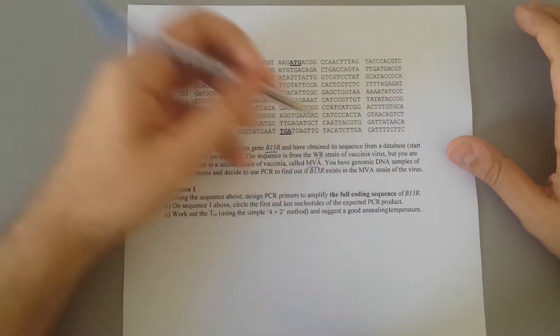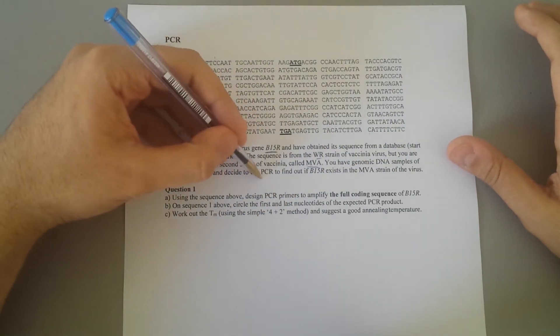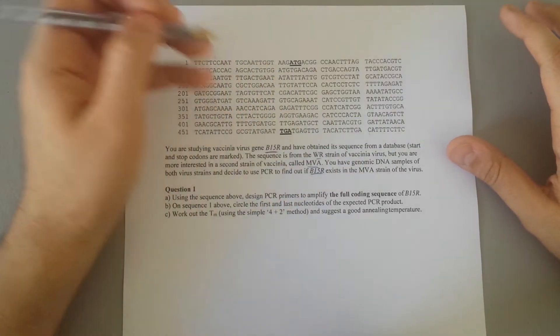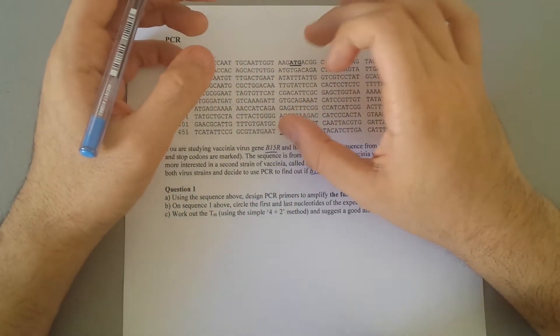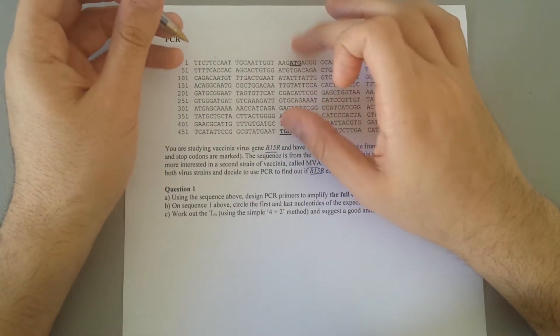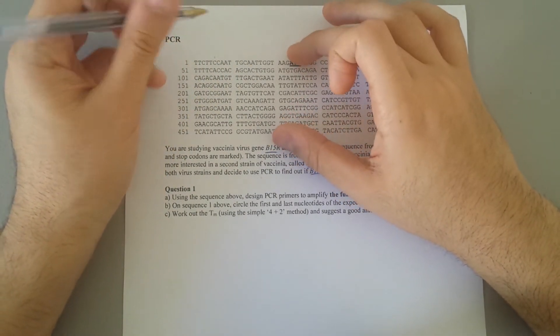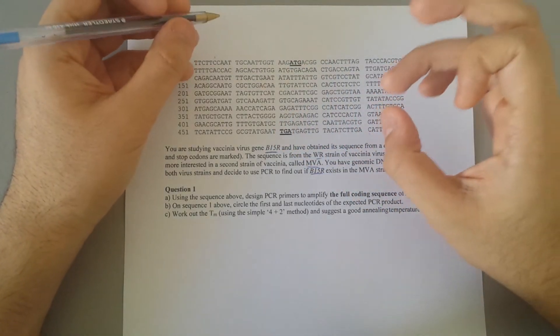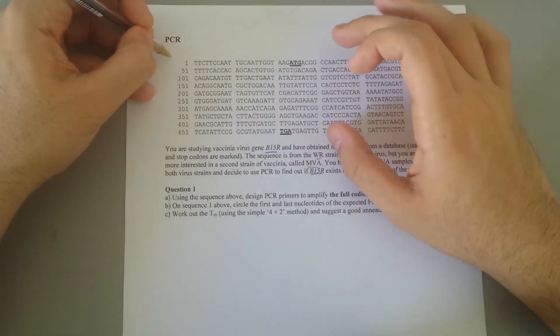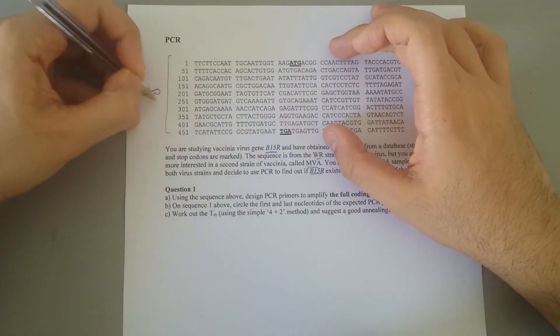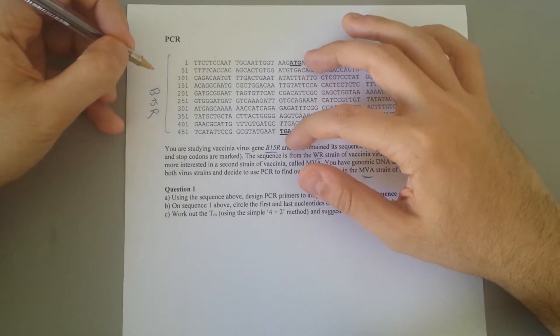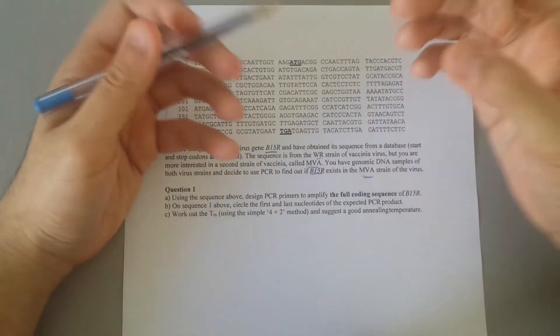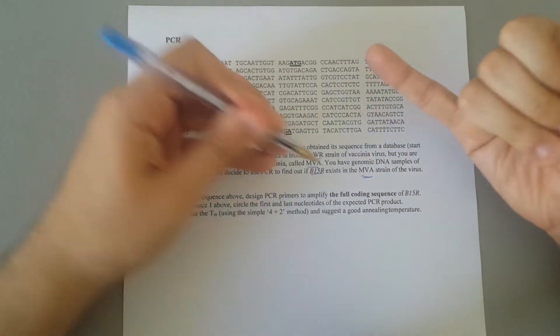We have genomic DNA samples of both virus strains and decided to use a PCR to find out if B15R exists in MVA strain of vaccinia virus. So what happens is that we want to obtain primers, and after we obtain primers, we want to amplify to see whether that specifically amplified DNA fragment exists in MVA strain of vaccinia virus. If the primer amplifies and matches, then it means that specific DNA exists in MVA strain as well.